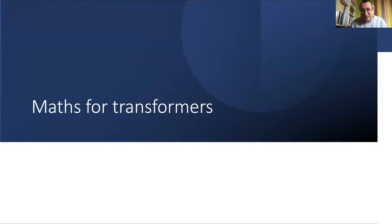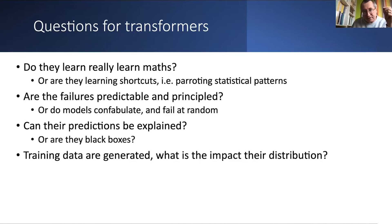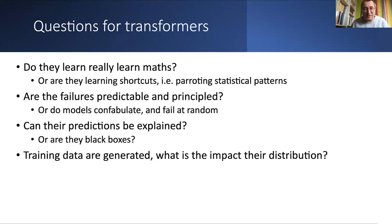Now I want to show a different approach: using math to better understand transformers. Key questions include: do transformers really learn the mathematics, or are they just learning shortcuts and parroting statistical patterns? Are failures predictable? For use in science, you absolutely want the model to fail in a nice and predictable way, not to confabulate. Is there explainability? And what's the impact of data generation on results?